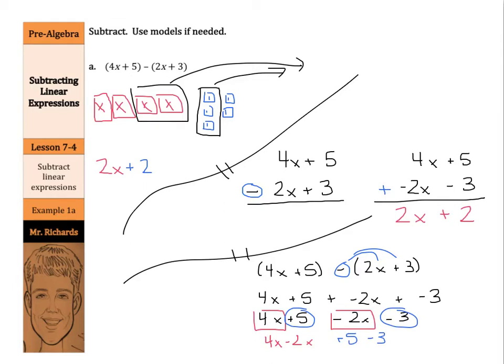For one last time on this problem, 4x - 2x is 2x, 5 - 3 is positive 2. So three different ways: one with models, one lining up with columns, and one solving horizontally and grouping like terms, to get an answer of 2x + 2.